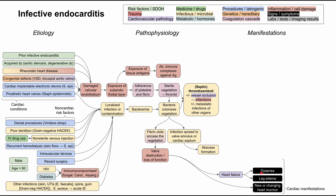If the infection spreads throughout the heart and causes abscess formation, this can affect the heart's electrical conduction system, resulting in a conduction delay. This can produce a new arrhythmia — you might notice palpitations or see the arrhythmia on EKG. This is a cardiac manifestation of a spreading infection arising from infective endocarditis.